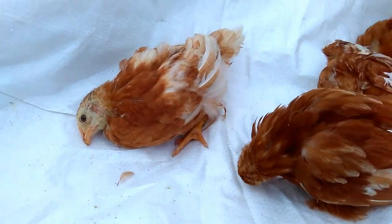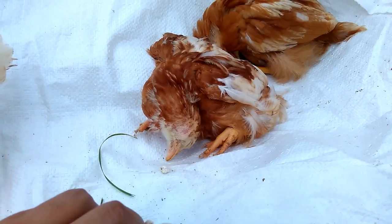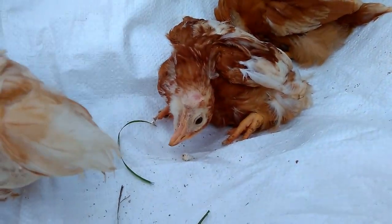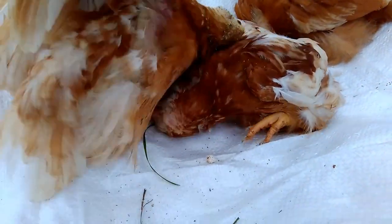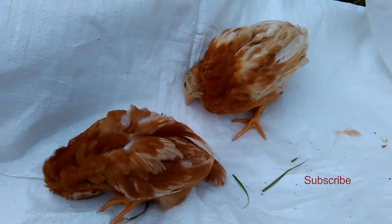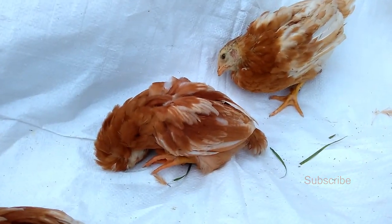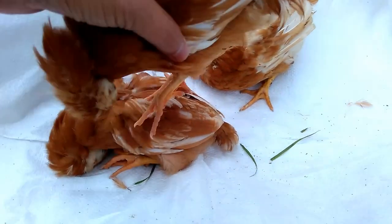These are young layer chickens aged 35 days, found symptoms of ND at the age of 17 days. Until now the mortality rate has reached 50%, and now observed nervous signs of tremors, paralyzed wings and legs, twisted necks and circling.